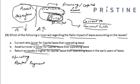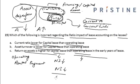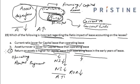Now the return on asset is stated to be higher for capital lease than operating lease in the early years of lease. However, in the early years of the lease the net income under capital lease is actually lower compared to operating lease, and the asset value is higher. This means the ROA is lower for capital lease — not higher. Hence this statement is incorrect, and since we are asked which option is incorrect, the answer is option C.